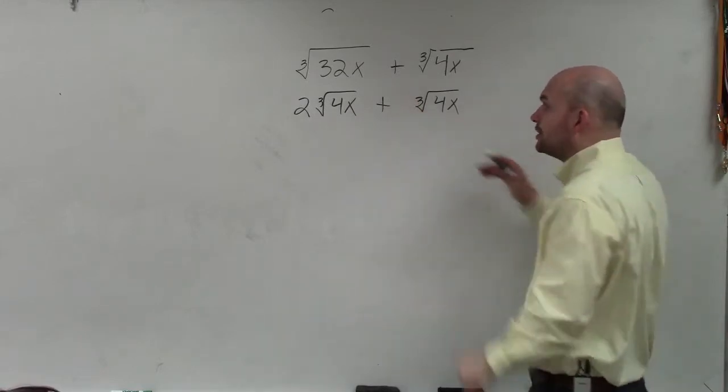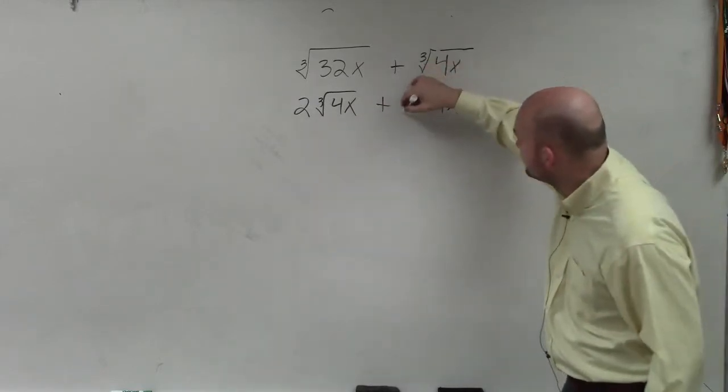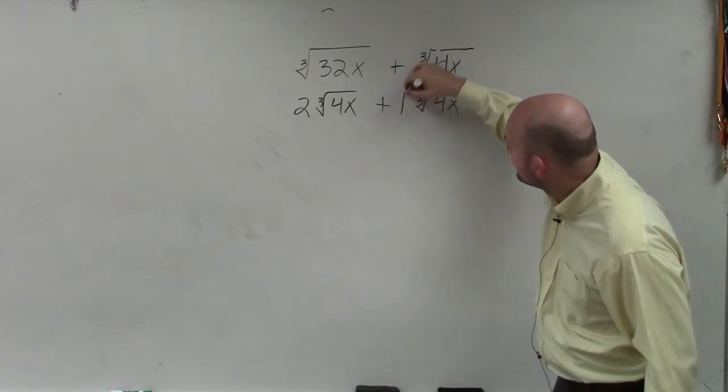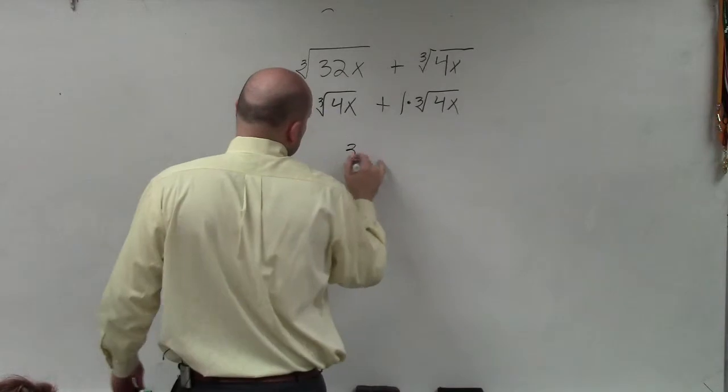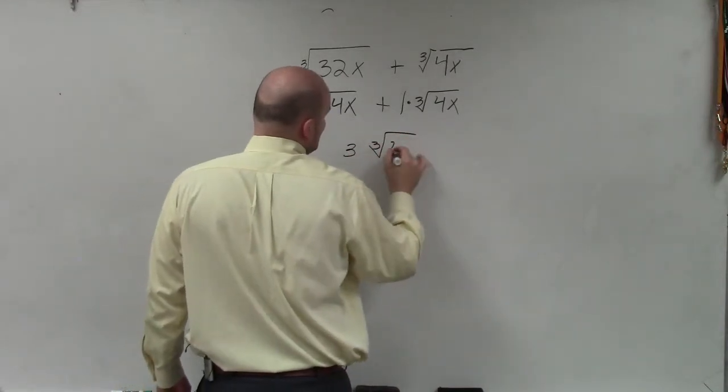but we add basically their coefficients. This is basically like a 1 times the cube root of 4x. So therefore, the answer is going to be 3 cube root of 4x.